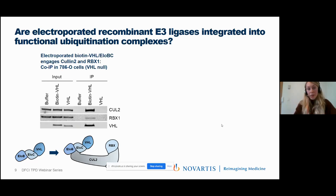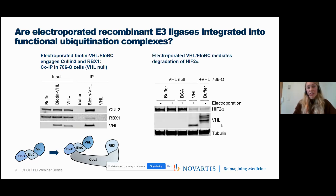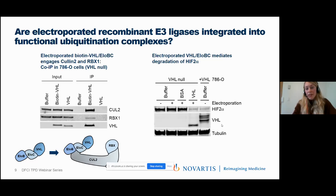In a pull-down experiment in 786-O cells (which are VHL-null), we electroporated either buffer, biotinylated VHL, or non-biotinylated VHL control. We tracked electroporation success by blotting for VHL itself, and found that after pulling down biotinylated VHL on streptavidin agarose, we also successfully pulled down Cullin-2 and RBX1, indicating complex assembly. Electroporated VHL also led to a stark decrease in HIF-2α levels, comparable to a lentiviral VHL re-expression control—confirming electroporated E3 ligases are functional.